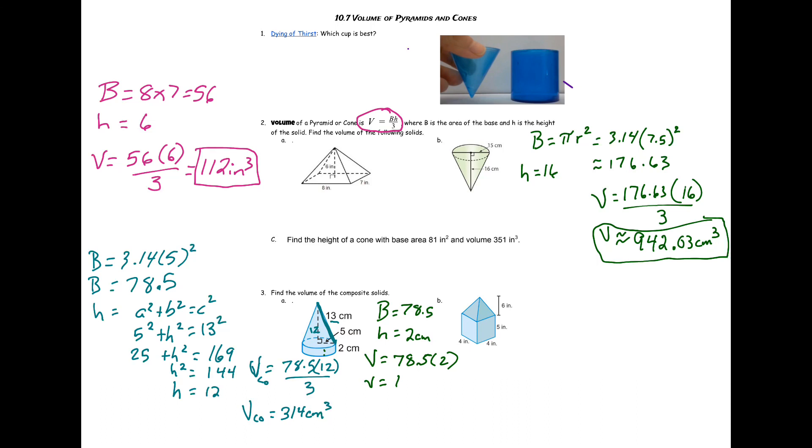So 157 centimeters cubed. And now since we found the volume of the cone and the volume of the cylinder, we just need to add those two numbers together to get our volume of the whole thing. Volume of the cylinder. So 471 centimeters cubed is our final answer there.